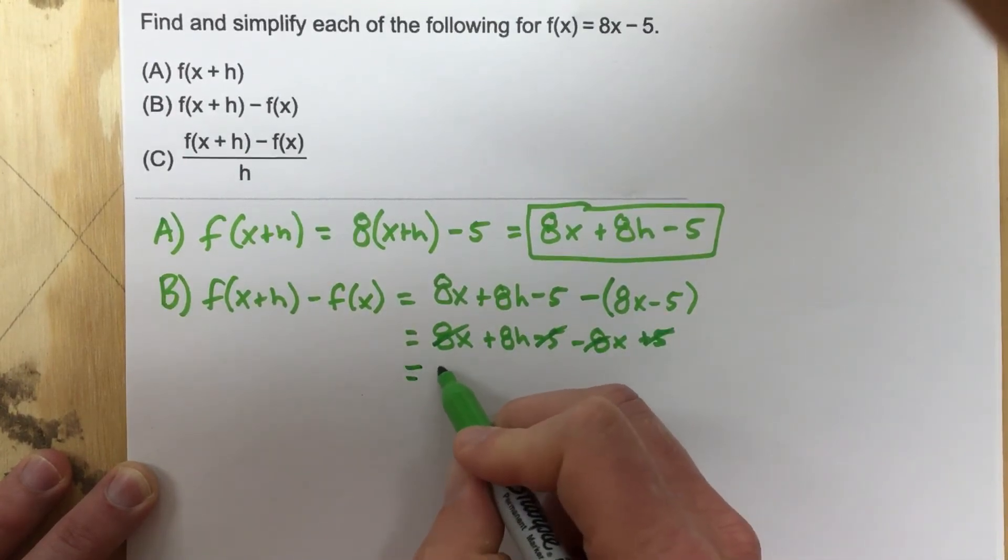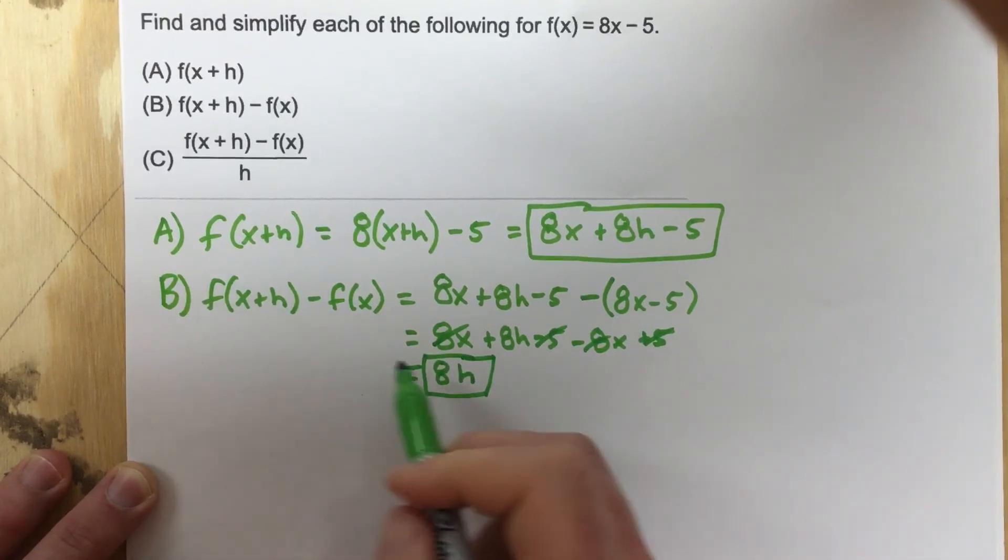And you're left with 8h. So this simplified down to just 8h. Now part C,